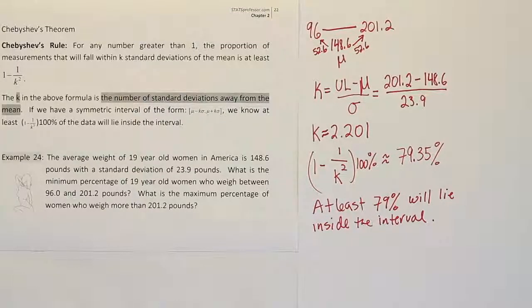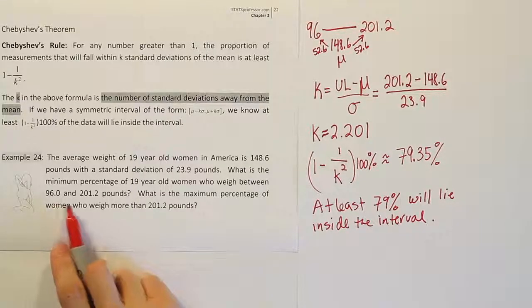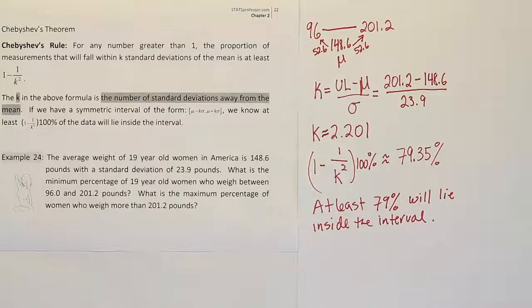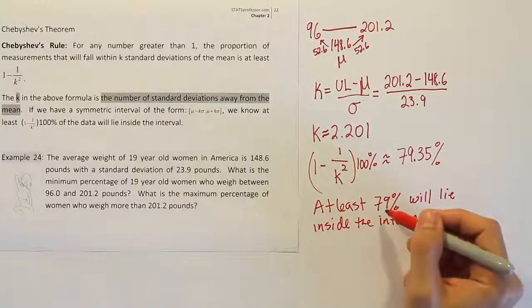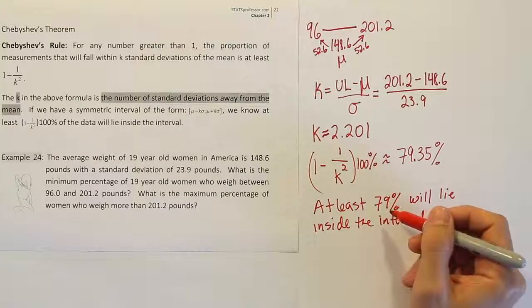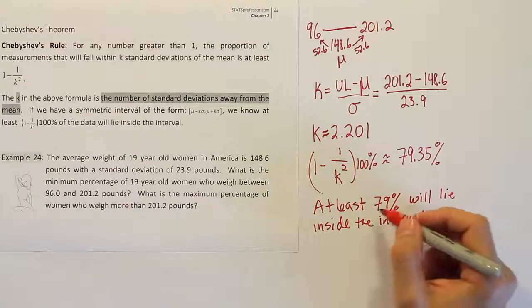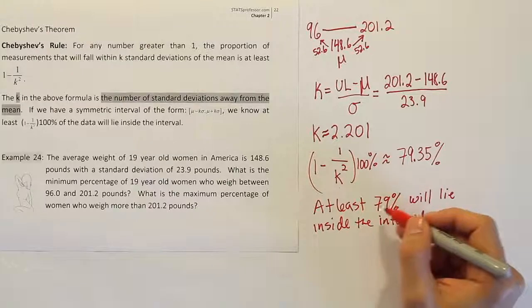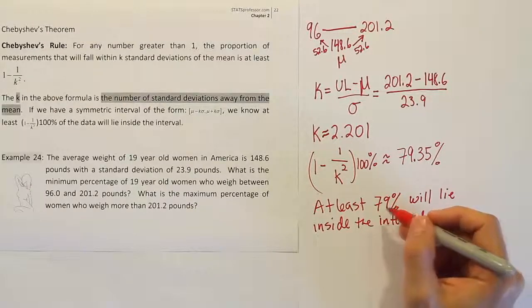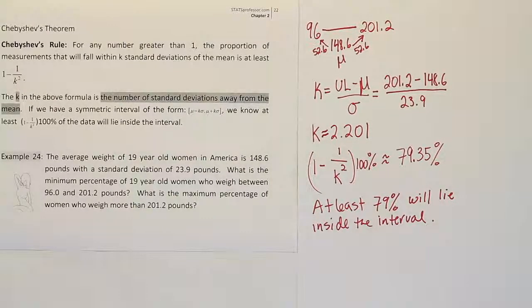So that's a large number, close to 80% of the women who are 19-year-olds in America will weigh between 96 and 201.2 pounds. And when I say close to 80, I really mean to say that that's the minimum percentage. So when it says at least, it means that it could be higher. It could be 100% of the women in that span or it could be 95% or 90%. It could be any number this size or higher. So it could be 79% or more inside the interval.